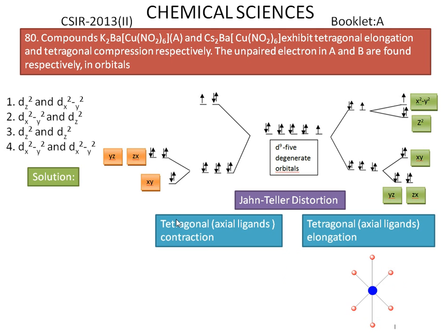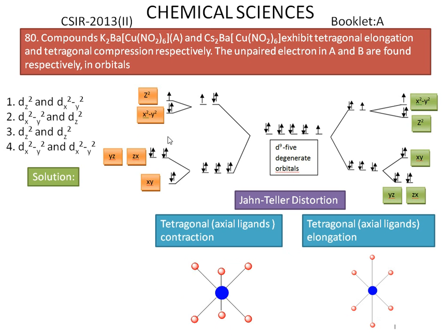In tetragonal axial ligand contraction, the structure is shown here. The two axial ligands have shorter bond lengths, whereas the equatorial bonds are longer. According to Jahn-Teller distortion, the shorter bonds lie on the z-axis. The corresponding orbital is dz², so the unpaired electron will be present in dz².